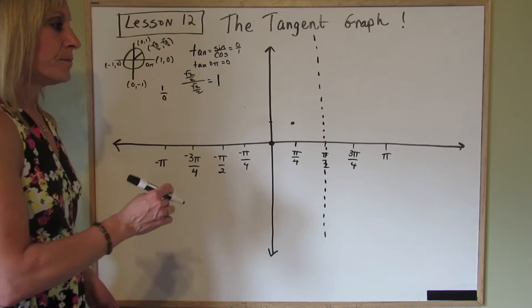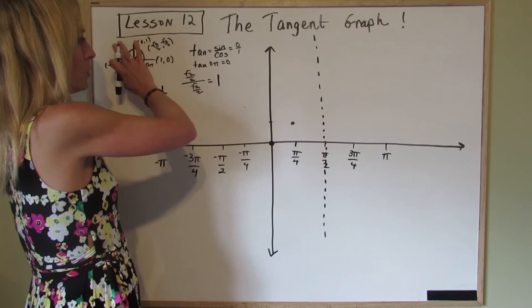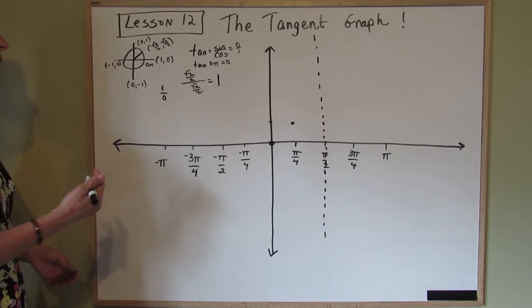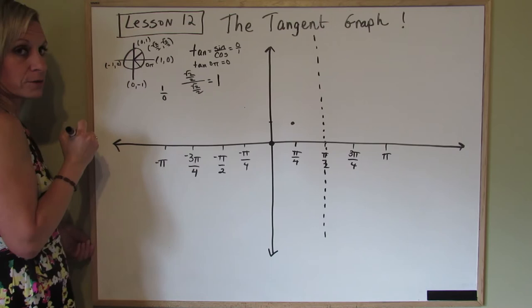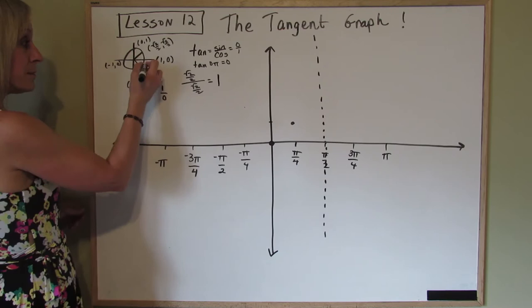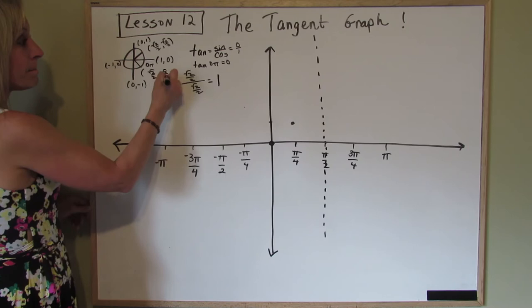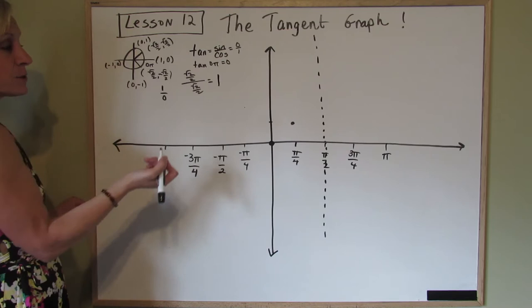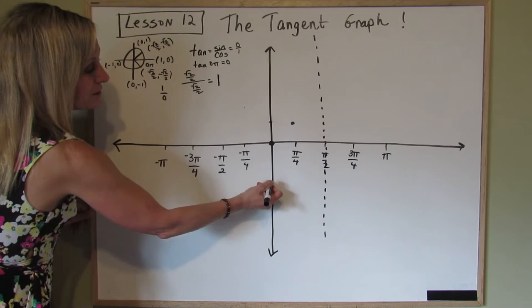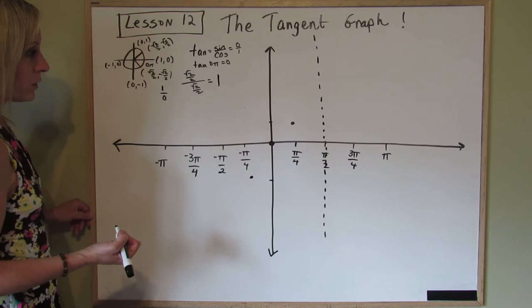Now, before we go forward to 3 pi over 4, let's go backwards. Let's go in a negative direction around the circle. So if we go negative pi over 4, that means we go down 45 degrees, which would be coterminal with 7 pi over 4. So the ordered pair is square root of 2 over 2, comma, negative square root of 2 over 2. If I put the sine over the cosine, I would get negative 1. So I'm down here at negative 1.